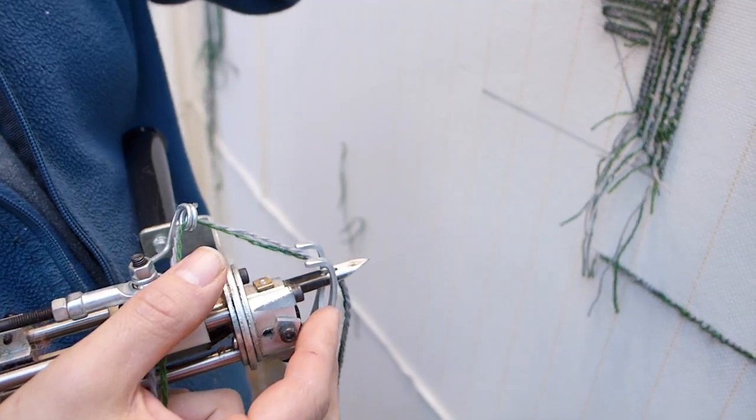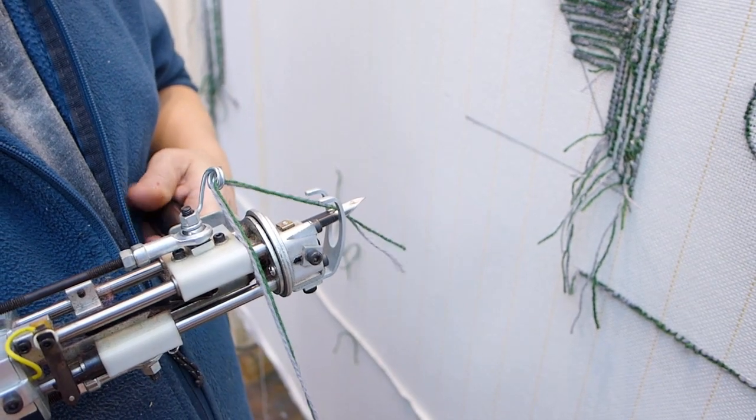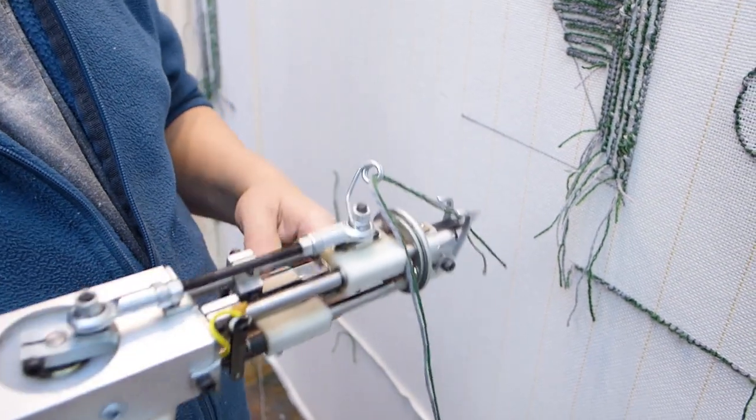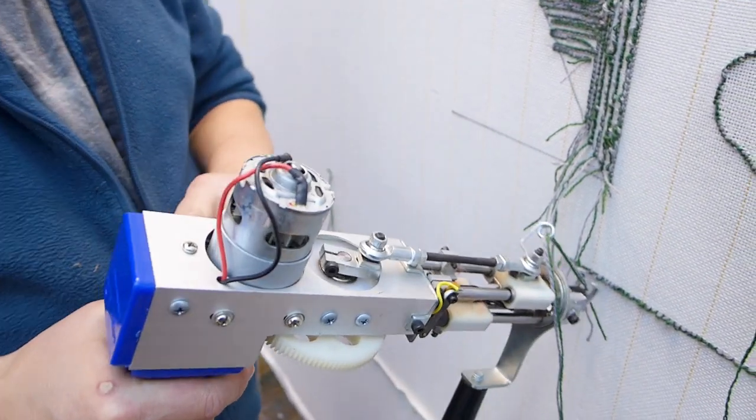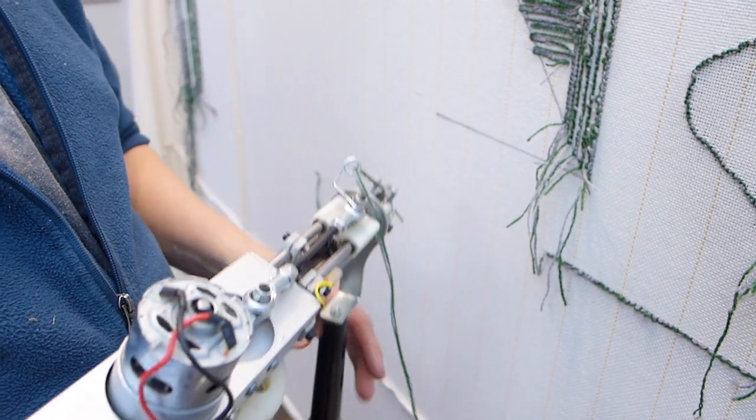You can fit a little bit more in there, more threads, and you can also pull back to save your yarn. When you're doing that, it's nice to have the machine off so it doesn't accidentally turn on.